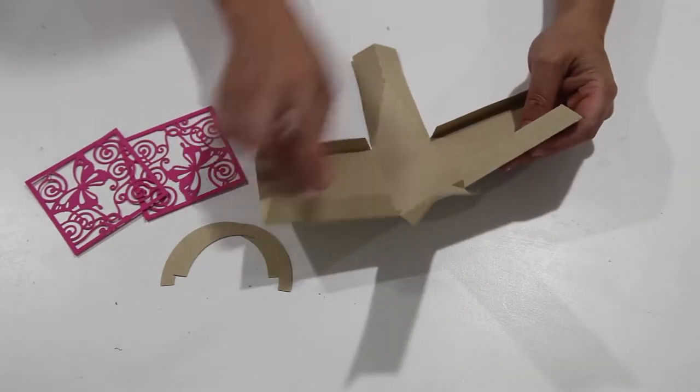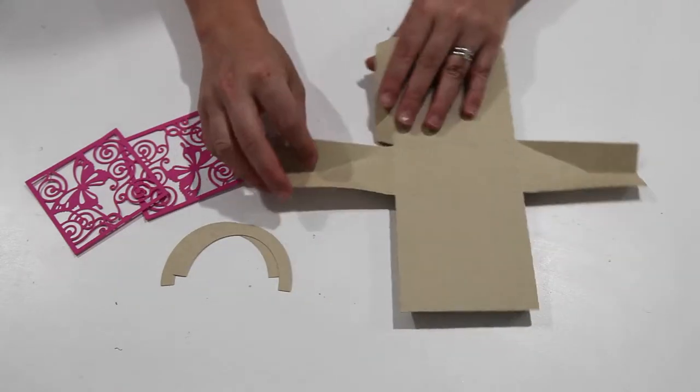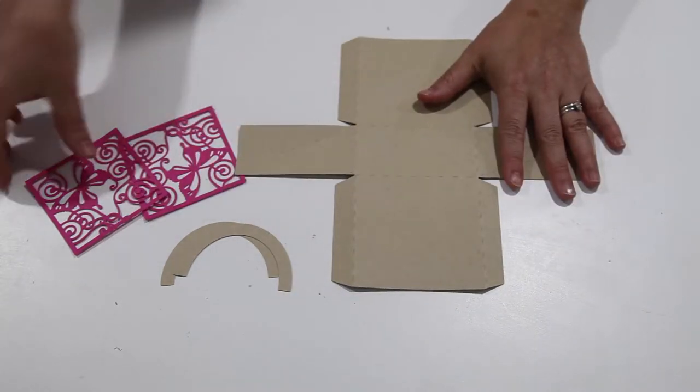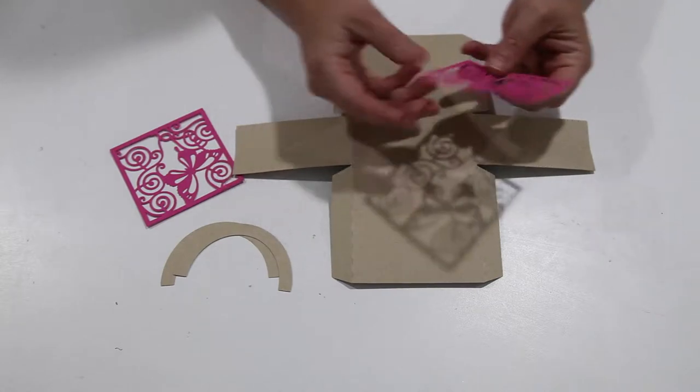And now you're just going to put glue on each of these tabs and glue it together to make it 3D. Now, if you want to before you start this, you can see that I've folded everything pretty well. You can actually glue on these pieces. Now, this is up to you.